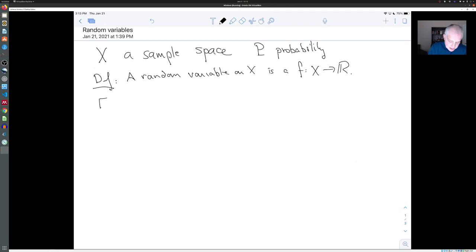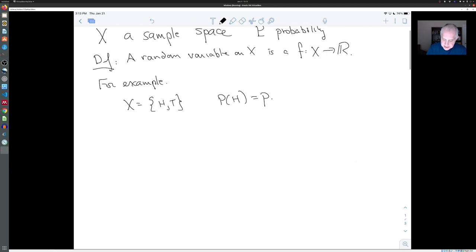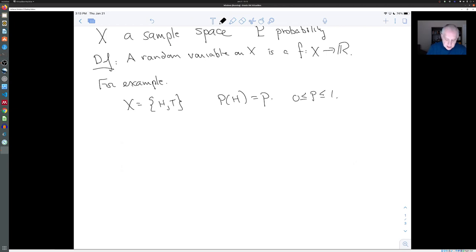So here's a very simple example. Suppose X has two elements, heads and tails. It's our coin flipping example. And the probability of getting heads is P. P is some number between zero and one.